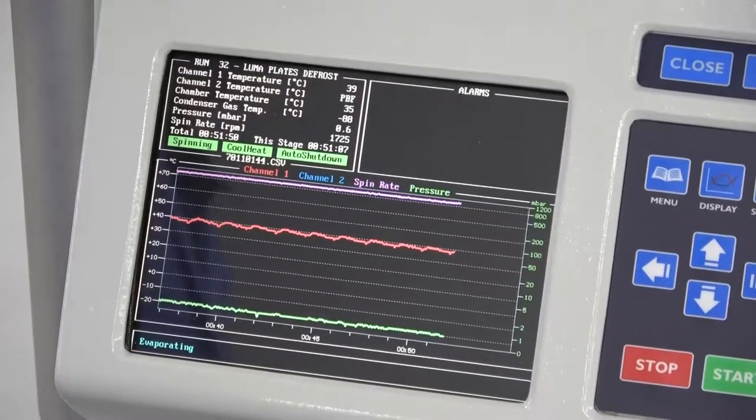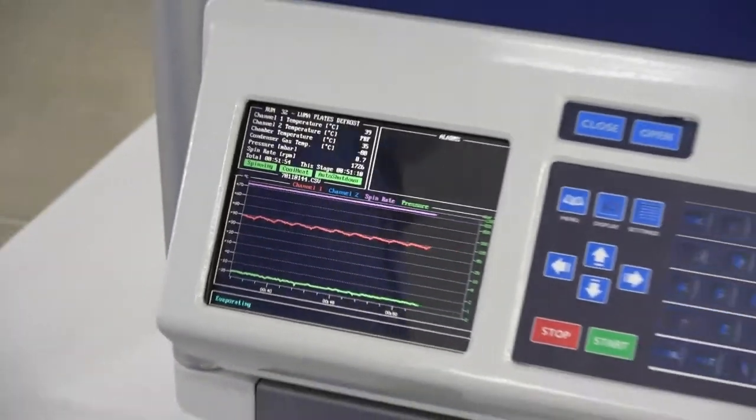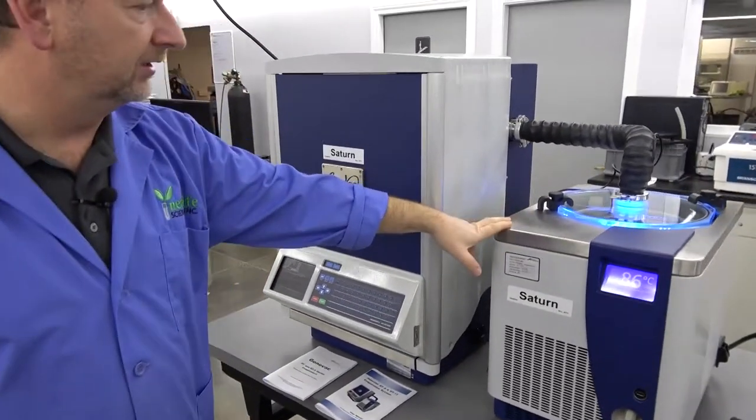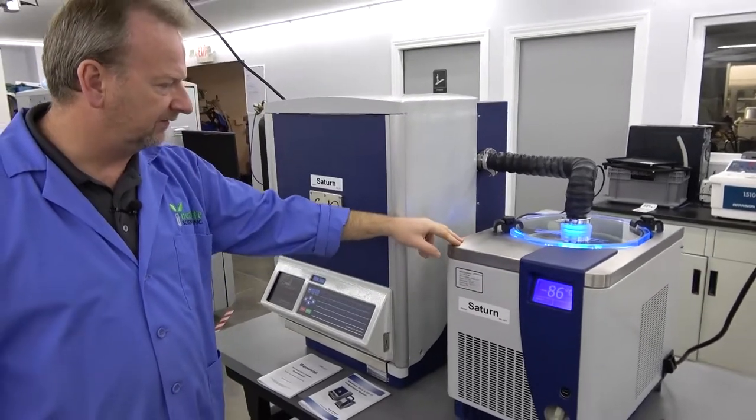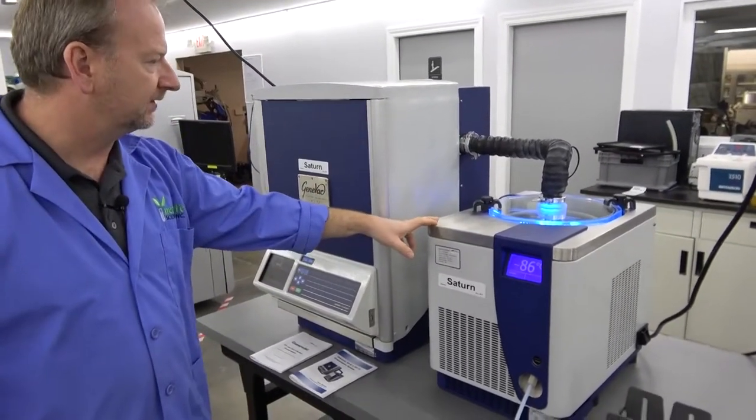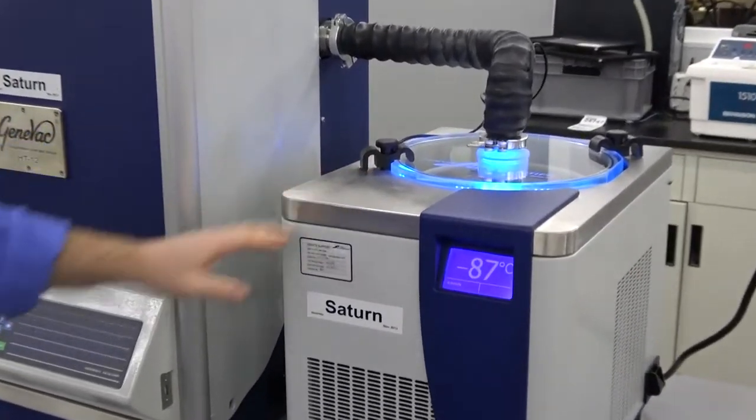We're going to be powering it down so we can get some shots of the inside here in a little bit. But like I said, it does have the upgraded condenser here to get the extremely cold temperatures so you can evaporate those real tough solvents out there. But just look how nice this thing is. Just a beautiful machine.